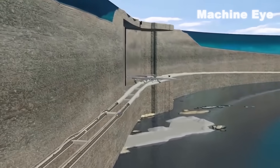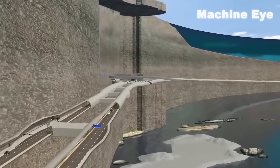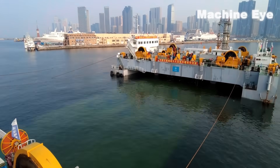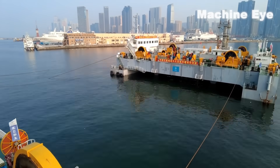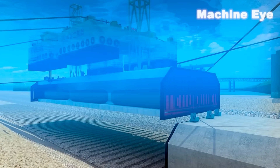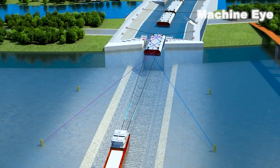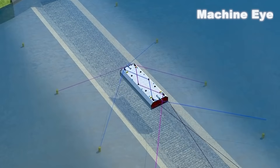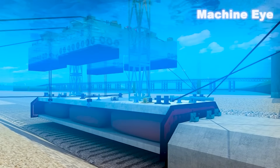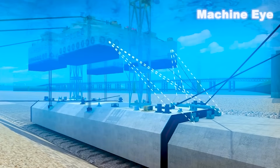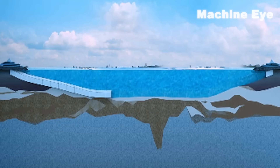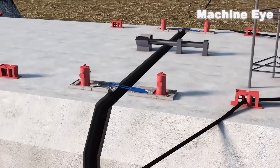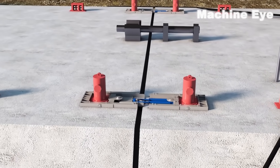In fact, there are many construction methods for undersea tunnels, and one common method is the pipe sinking method — also called the immersed pipe method. This method involves sinking pipes made on land to a designated position on the seabed and then splicing them together. It is not just a single section of pipe; the required pipes must be assembled section by section.